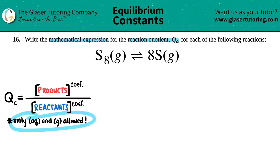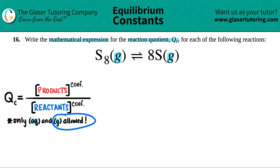Now there are rules. If you're using a QC formula, only aqueous substances and gases are allowed — no solids and no liquids. So first always check the states. In this case, I have a gas and a gas. Since all gases are allowed, both of these are going to be in the QC formula. I'll give a check for the reactant and a check for the product.